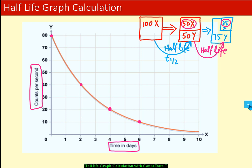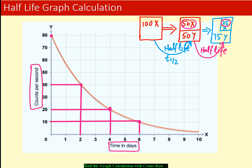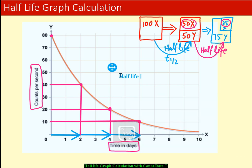Drawing lines on the graph, you can see that 80 becomes 40 after two days, 40 becomes 20 after another two days, and 20 becomes 10 after another two days. Each interval represents one half-life. So the half-life in this case is equal to 2.0 days.